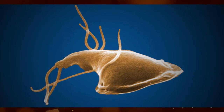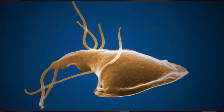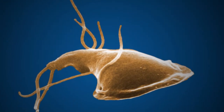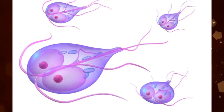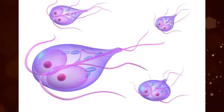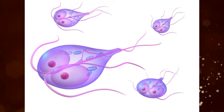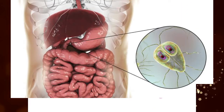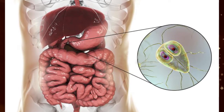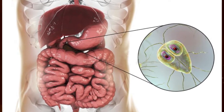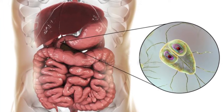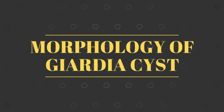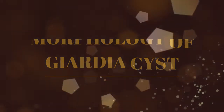Giardia, also known as Giardia lamblia, Giardia intestinalis, or Giardia duodenalis, is a flagellated parasite that colonizes and reproduces in the small intestine, causing Giardiasis. In this video we are going to discuss the morphology of Giardia cysts.